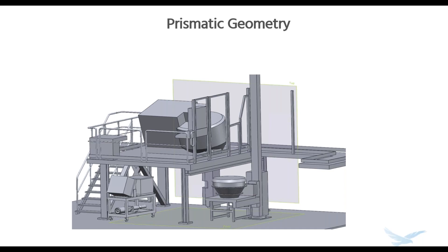This model on screen is what we call prismatic, basic, or mechanical geometry — made up of primarily simple or primitive shapes like cylinders, planes, and cones. I'm sure we have a lot of SOLIDWORKS users in the room today, and I'd wager that most of you wouldn't feel the least bit intimidated by having to model something like this. In our previous installment, we showed you how to efficiently model these objects from scan data.